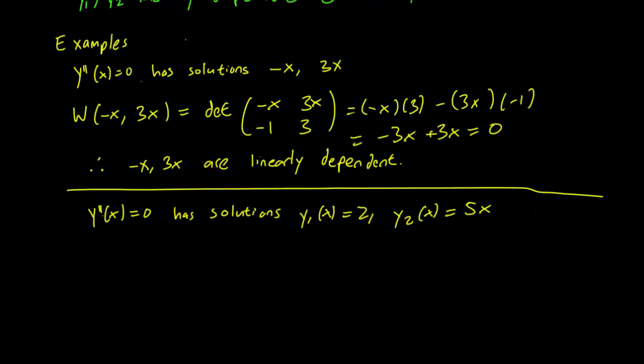Now let's look at two other solutions of the same differential equation. So y''(x) equals 0 also has solutions y1(x) equals 2 and y2(x) equals 5x. And let's take the Wronskian of that and see what happens.